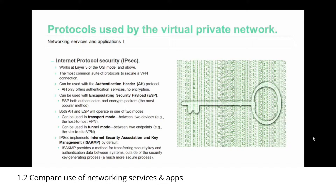Both AH and ESP will operate in one of two modes. The first mode is transparent mode, which operates between two devices as in a host-to-host VPN. Or they can be used in tunnel mode, which operates between two endpoints as in a site-to-site VPN. IPsec implements Internet Security Association and Key Management, ISAKMP, by default. ISAKMP provides a method for transferring security key and authentication data between systems outside of the security key generating process, making it a much more secure process.